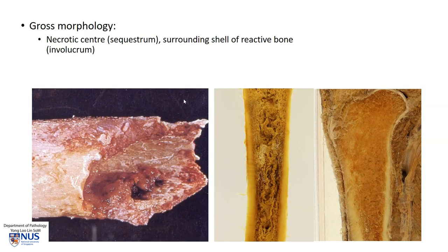Grossly there is often a necrotic center known as the sequestrum — as you can see here, this reddish area — and there is a surrounding shell of reactive bone which is viable or living bone. This gives rise to a very mottled appearance with some areas suggestive of cavitation, some friable brittle appearing dead bone, and surrounding viable bone.